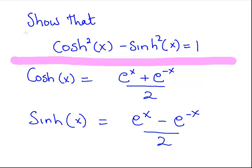So in this presentation we're going to show that cosh squared x minus sinh squared x is equal to 1. These are hyperbolic functions.